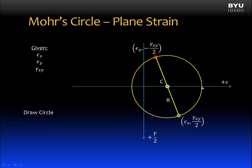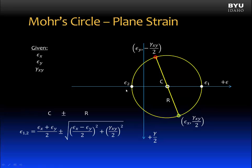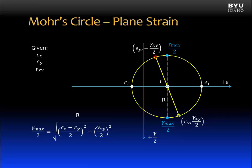Once we have our radius, we can draw the circle. Where the circle intersects the horizontal axis, that's where we have our maximum normal strains — in the positive sense and also in the negative sense. We simply take the center of the circle and add the radius to get epsilon one, or subtract the radius to find epsilon two. Here's the equation for in-plane principal strains. Maximum in-plane shear strain divided by two can be found as the radius of the circle, at the bottom of the circle.